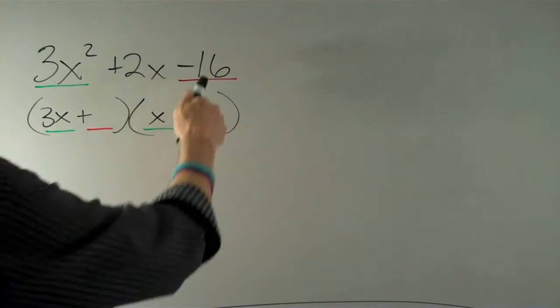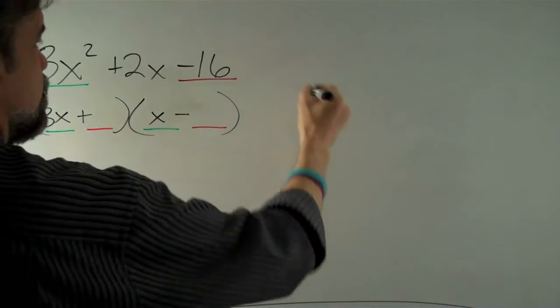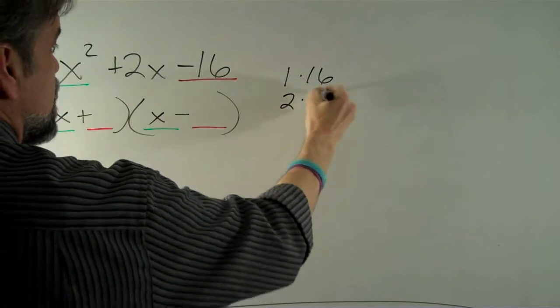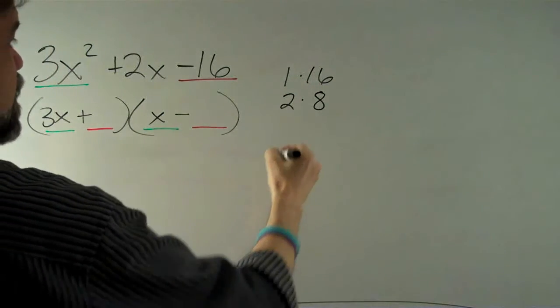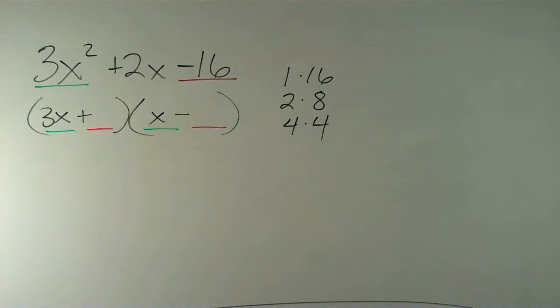Now, what are the possible factors of 16? Well, we have 1 times 16, we have 2 times 8, and we have 4 times 4.